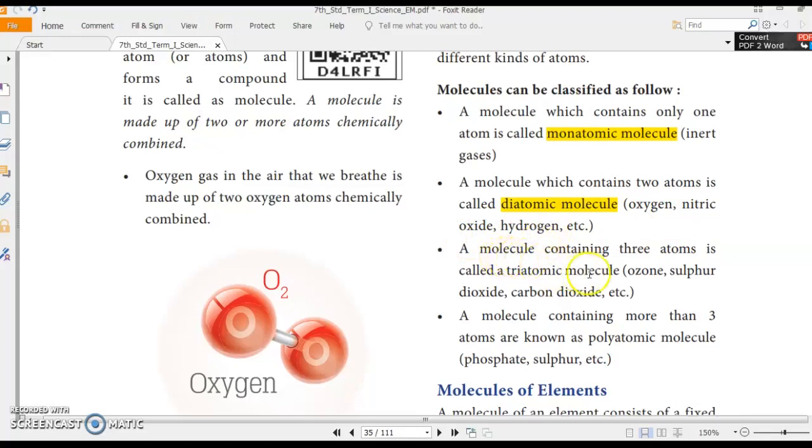Then next come to triatomic molecule. A molecule containing three atoms is called triatomic molecule. A molecule which contains three atoms. Okay. Example: ozone. We already know that ozone is composed of three oxygen atoms. Then sulfur dioxide. It contains one sulfur atom and two oxygen atoms. Then carbon dioxide. It contains one carbon atom and two oxygen atoms. You understand?